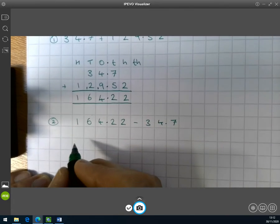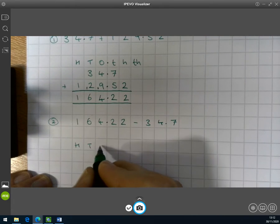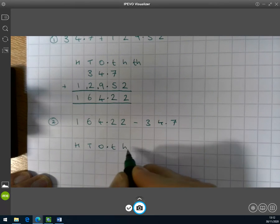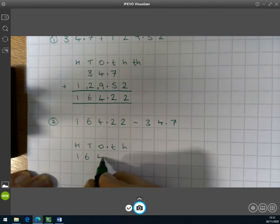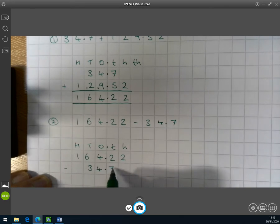So we're lining up our column headings again. So we know we've got our hundreds, our tens and our ones, our tenths and our hundredths. And we're going to do 164.22 subtract 34.7.